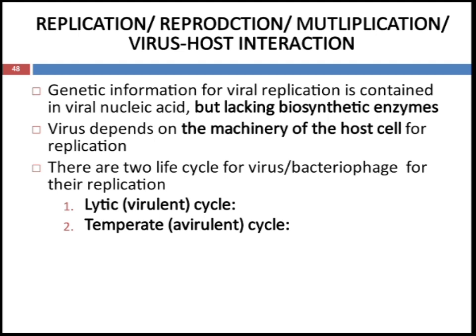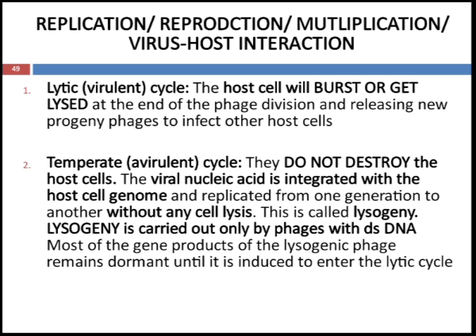There are two life cycles for virus or bacteriophage: the lytic or virulent cycle, and the temperate or avirulent cycle. In the lytic cycle, the host cell will burst or get lysed at the end of phage division, releasing new progeny phage to infect other host cells. In the temperate cycle, they do not destroy the host cell. The viral nucleic acid is integrated with the host cell genome and replicated from one generation to another without any cell lysis. This is known as lysogeny, and lysogeny is usually carried out by bacteriophage or viruses with double-stranded DNA.